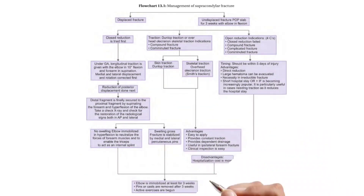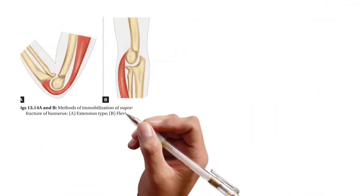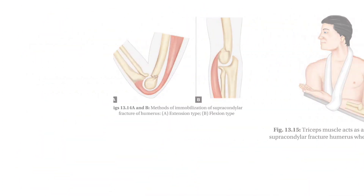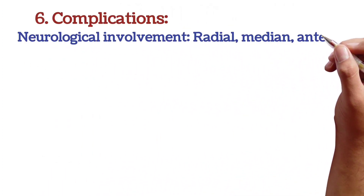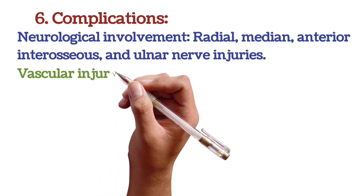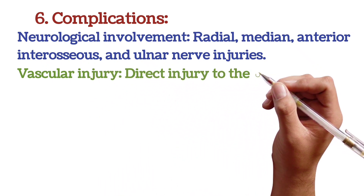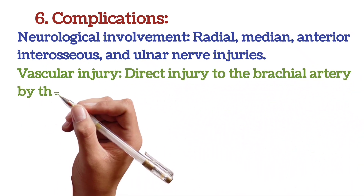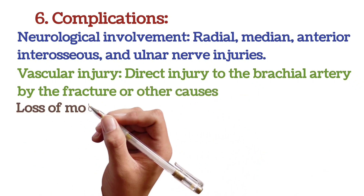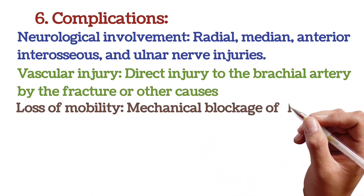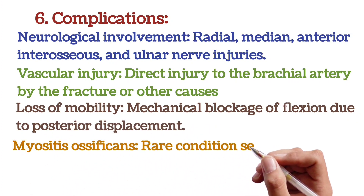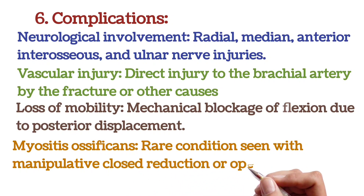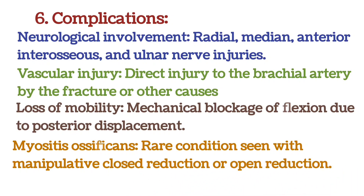Complications: Functional impairment complications include neurological involvement — radial, median, anterior interosseous, and ulnar nerve injuries. Vascular injury involves direct injury to the brachial artery by the fracture or other causes. Loss of mobility results from mechanical blockage of flexion due to posterior displacement. Myositis ossificans is a rare condition seen with manipulative closed reduction or open reduction.